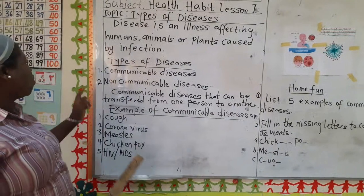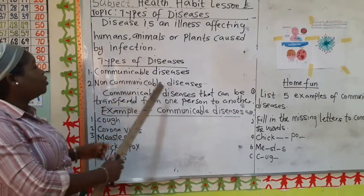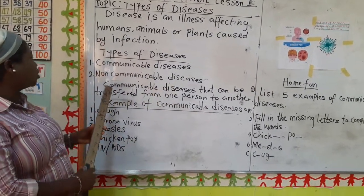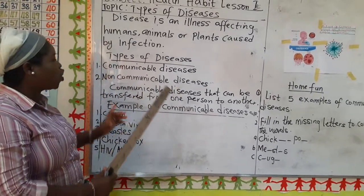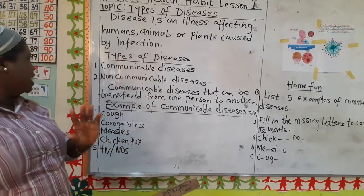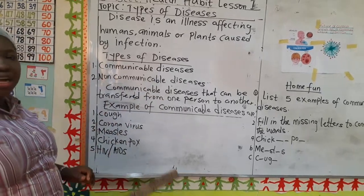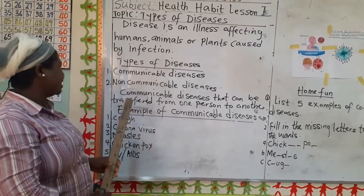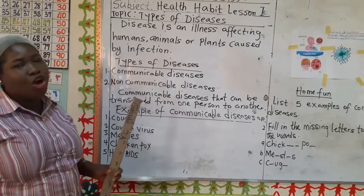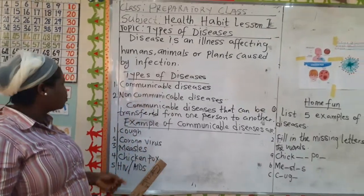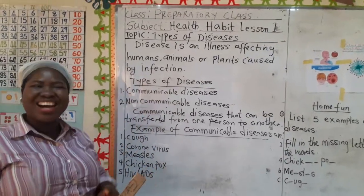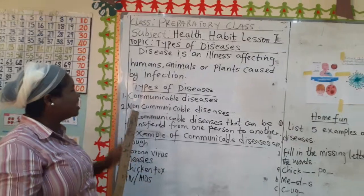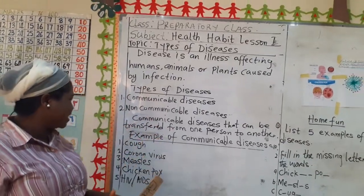We have two types of diseases. Number one, we have communicable diseases. Number two, we have non-communicable diseases. We are going to look at number one, which is communicable diseases.